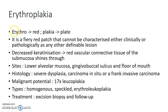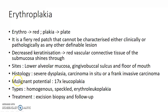Now let us see about erythroplakia. Erythro means red and plakia means plate. Erythroplakia is a fiery red patch that cannot be characterized either clinically or pathologically as any other definable lesion. In erythroplakia there is decreased keratinization, due to which the red vascular connective tissue of the submucosa shines through. Erythroplakia occurs in the lower alveolar mucosa, gingivobuccal sulcus, and floor of mouth. On histological examination we can see severe dysplasia, carcinoma in situ, or frankly invasive carcinoma. The malignant potential of erythroplakia is 17 times that of leukoplakia.